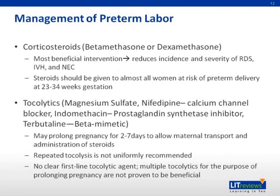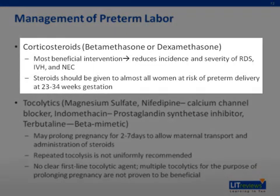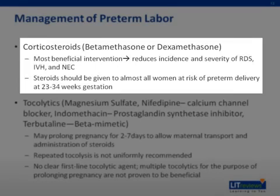Now let's turn to the management of preterm labor. There are four basic things to keep in mind. Number one is corticosteroids, such as betamethasone or dexamethasone. If your patient is between 23 and 34 weeks of gestation, you will give steroids. At Duke, we give betamethasone 12 milligrams intramuscularly every 24 hours for a total of two doses. This is the most beneficial intervention in preterm labor because it reduces the incidence and severity of respiratory distress syndrome, intraventricular hemorrhage, and necrotizing enterocolitis. Studies are also being done to assess the benefit of giving steroids for late preterm labor after 34 weeks, but this is not the standard of care at this time.